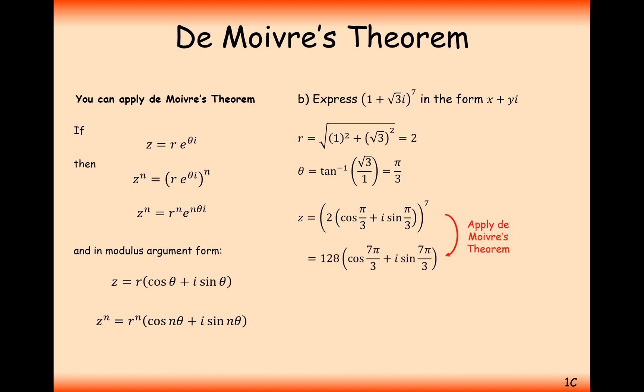So that's going to be 128—that's 2 to the power of 7—and then cos 7 pi by 3 and sine 7 pi by 3. This 7 pi by 3 angle is definitely outside the range from pi to minus pi. So in this case, we'll have to subtract 2 pi from the angle. Now it's inside the correct range from minus pi to pi. Now we can evaluate this. If we simply expand the brackets, we're going to get 64 plus 64 root 3i.